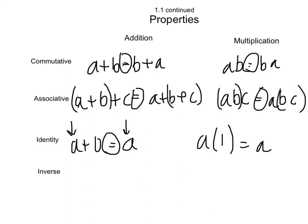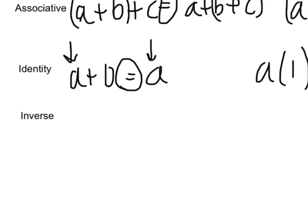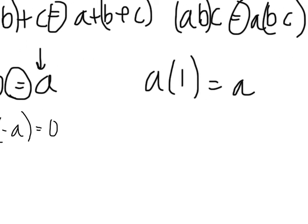Think of the inverse as the opposite of the number. You have a, the opposite would be negative a, so a plus negative a equals 0. For multiplication, a times the reciprocal, which is 1 over a, equals 1.